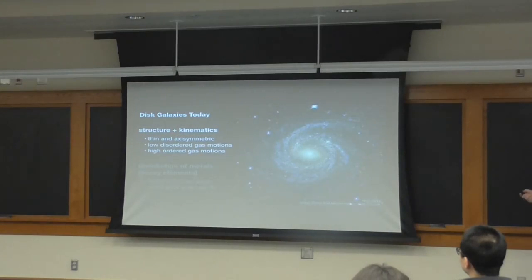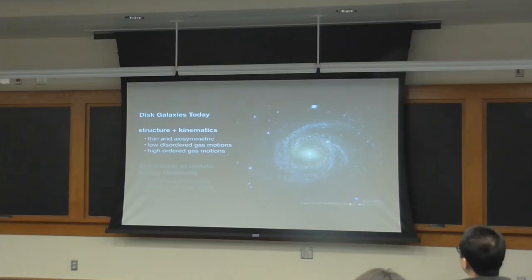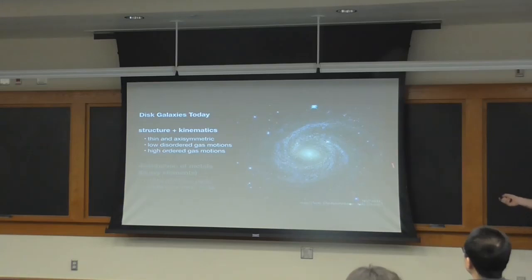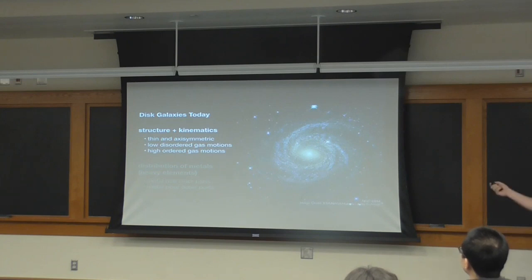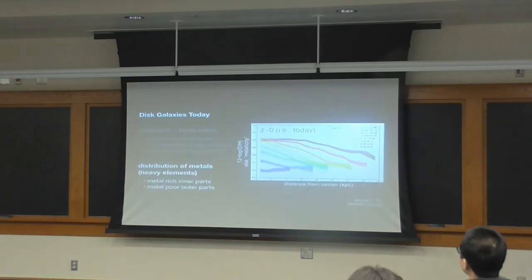So this is what a typical galaxy looks like in real life. This is a Hubble observation. And here are those basic characteristics. If it's thin and axisymmetric, you can only see one of those here — if it's axisymmetric, trust me, it's thin. And if it's rotating, you have to trust me on that as well.